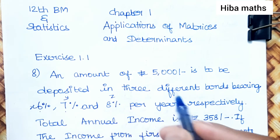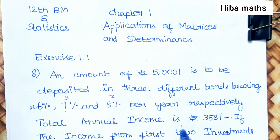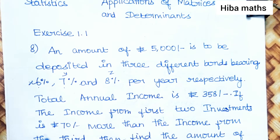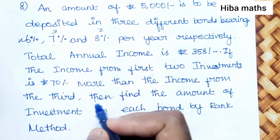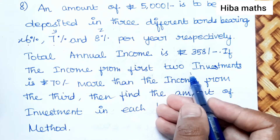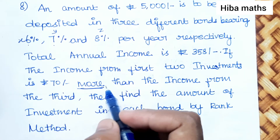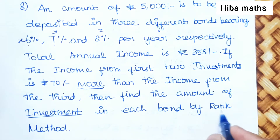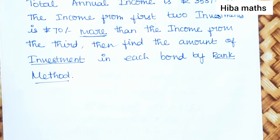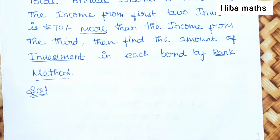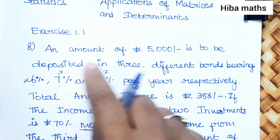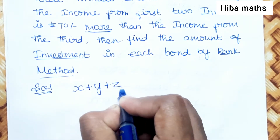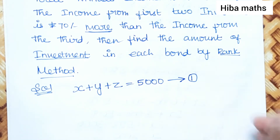Let the amounts deposited in the three different bonds be X, Y, and Z respectively. The total annual income is rupees 358. The income from the first two investments is 70 more than the income from the third. The total amount deposited is 5,000, so the first equation is X plus Y plus Z equals 5,000.